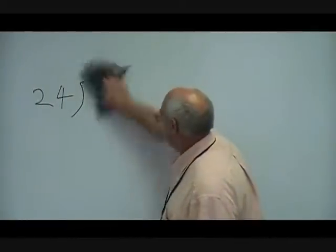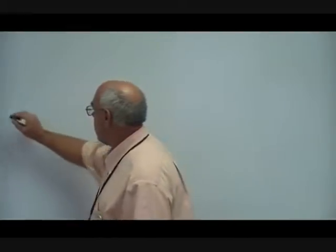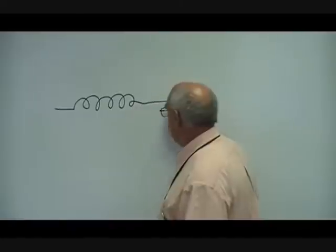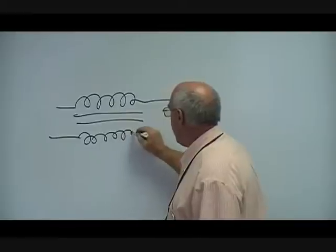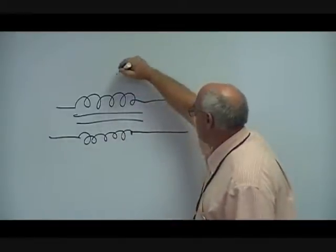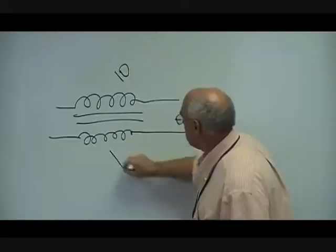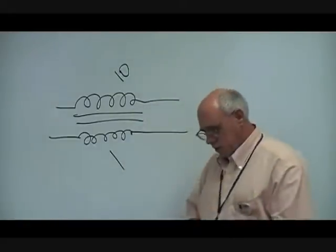Have you ever wondered how a transformer can have high voltage coming in and low voltage coming out, or vice versa? The transformer doesn't determine whether it steps up or steps down voltage — that's determined by how you hook it up. It's a turn-to-turn ratio. If we look at the symbol, if one side has 10 times as many turns as the other, that's a one-to-ten ratio.